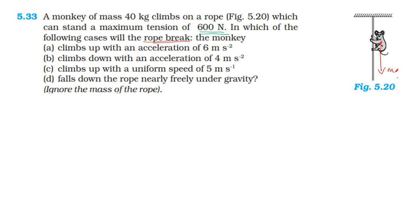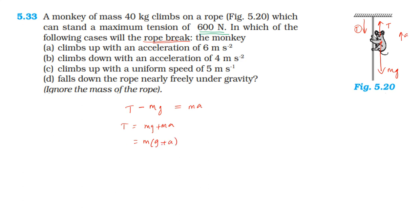Analyzing the monkey: the rope pulls up with tension T and gravity pulls down with mg. Applying Newton's second law for upward acceleration: T minus mg equals Ma. Therefore T equals M(g plus a). This is the general formula. For the first case, acceleration is upward at 6 m/s².